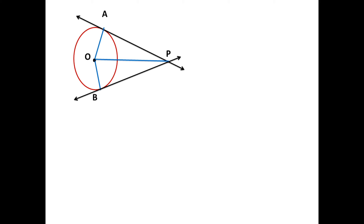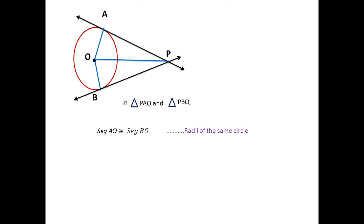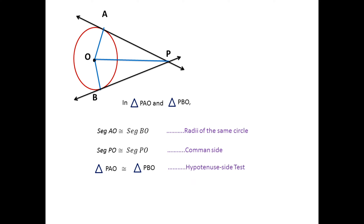By doing this construction we get two triangles: triangle PAO and triangle PBO. Consider these two triangles PAO and PBO. If we can show these two triangles are congruent, we will get the result. The first condition is segment AO is congruent to segment BO, as these are radii of the same circle. The second condition is segment PO is congruent to segment PO, as it is a common side for both triangles. So by the hypotenuse-side theorem, triangle PAO is congruent to triangle PBO.